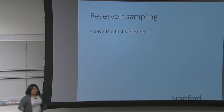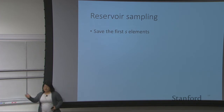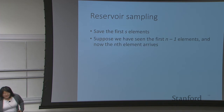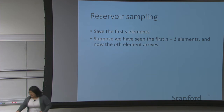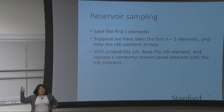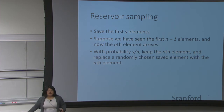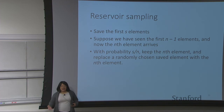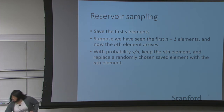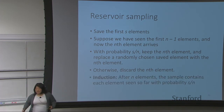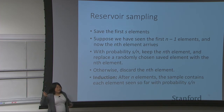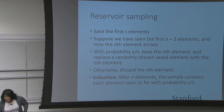So how do we do this? We start by saving the first s elements, and then we might replace them later. Suppose we have seen the first n minus one elements and now we are seeing the nth element. You either keep the nth element or discard it. You keep the nth element with probability s over n, then select one at random to kick out. Otherwise you discard it. It turns out you can prove by induction that after n elements, every element you've seen so far is equally likely to be in the set. That is reservoir sampling.